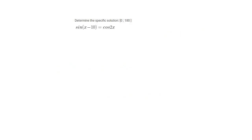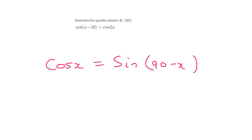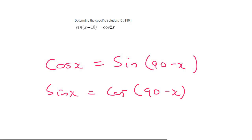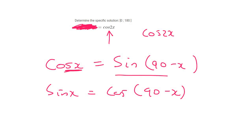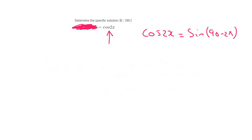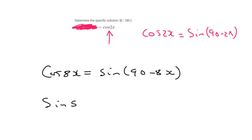Mathematically, cos x is always the same as sin(90 − x), and sin x is always the same as cos(90 − x). So we can change cos 2x into sin(90 − 2x). For more practice: cos 8x is the same as sin(90 − 8x), and sin 5x is the same as cos(90 − 5x).